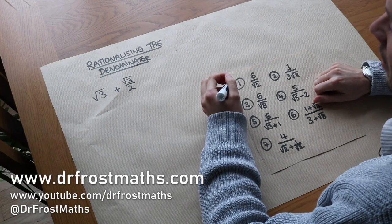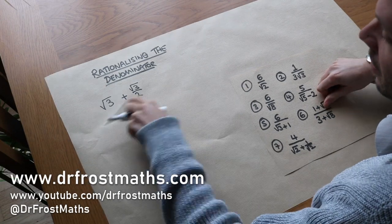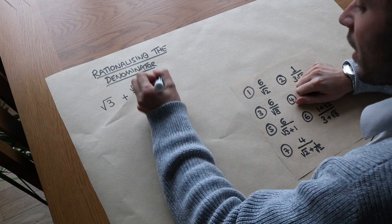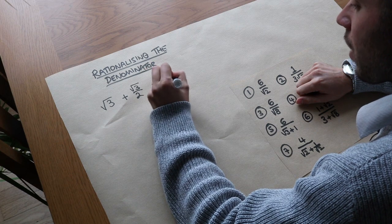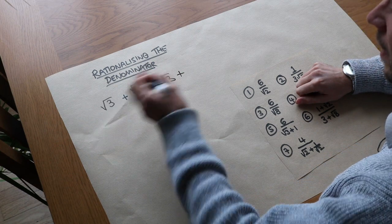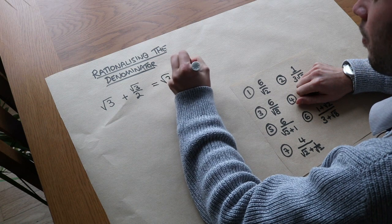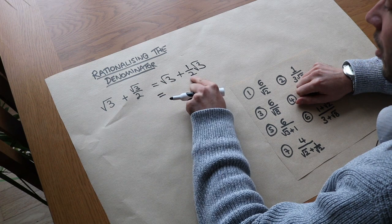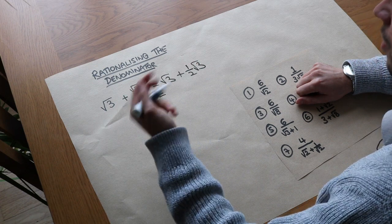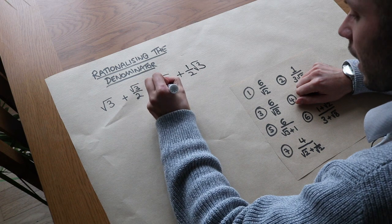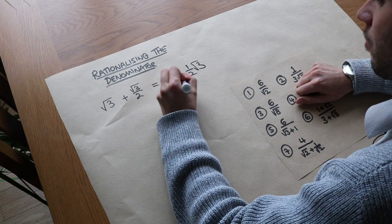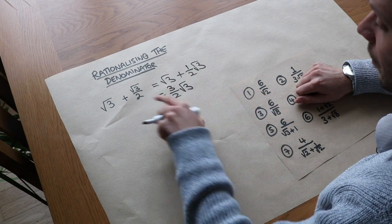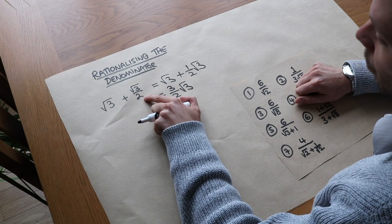Hello and welcome to this video on rationalizing the denominator. Suppose we had root 3 and then added root 3 over 2. We could see this as root 3 plus half of root 3. So if you have one lot of root 3 and add half a lot of root 3, you have one and a half lots of root 3, or 3 over 2 lots of root 3. In this case it was quite easy to add these two surds together when the surd was over a whole number.